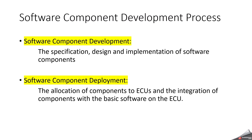In the software component development, we can consider two phases: one is software component development, and another one is software component deployment. In the software component development phase, we talk about the specification, design, and implementation of software components. Whenever you are getting a requirement and developing software components in the application layer — creating ports, internal behavior, events, runnable entities, and DSLRs related to the particular software component — that is software component development. In software component deployment, we are talking about integration of your application to base software and the allocation of components to ECU.